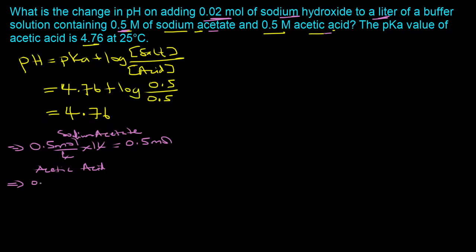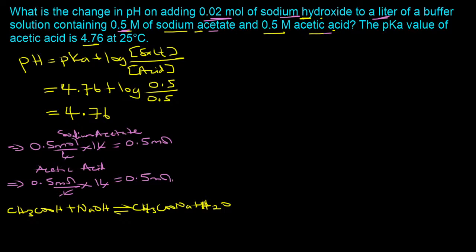When you add sodium hydroxide — a base — to this buffer system, it reacts with the acetic acid (CH₃COOH) to produce more of the salt (acetate). So adding the base decreases the moles of acetic acid and increases the moles of sodium acetate by the equivalent mole amount of base added.